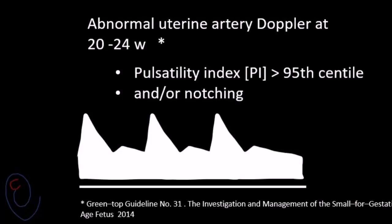This abnormal uterine artery Doppler at 20 to 24 weeks is defined by a pulsatility index more than the 95th percentile and/or the presence of early diastolic notch.